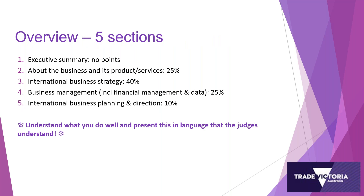There are five sections in the application: an executive summary about the business, its products and services, international business strategy, business management which includes financial management and data, and the section we will be focusing on today — namely international business planning and direction. Four of the five sections have an award score attached to them. The executive summary has no points, but it's still important. All the others have a score and today's section has a score of 10 percent. Throughout your application, please understand what you do well, what your competitive advantage is, and emphasize that in language the judges can understand. Don't use jargon or technical terminology, and if you do, explain what it means.